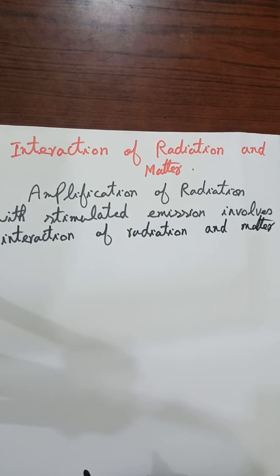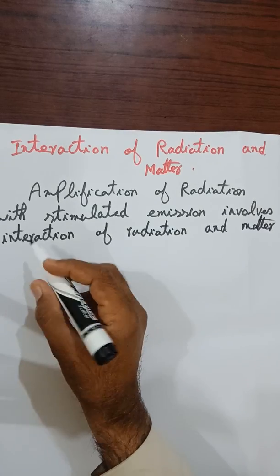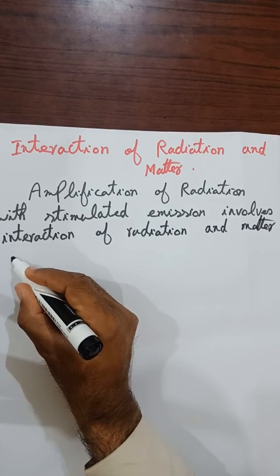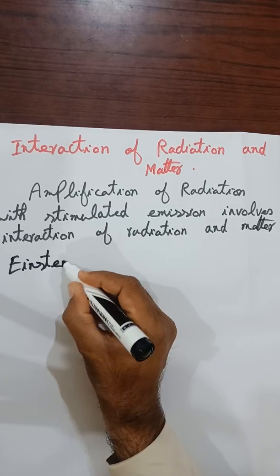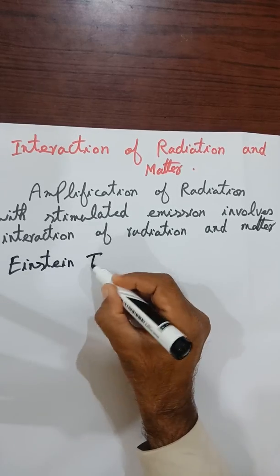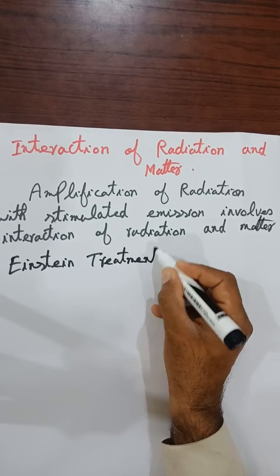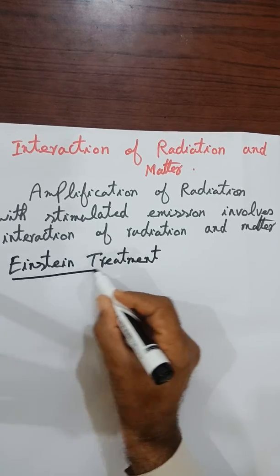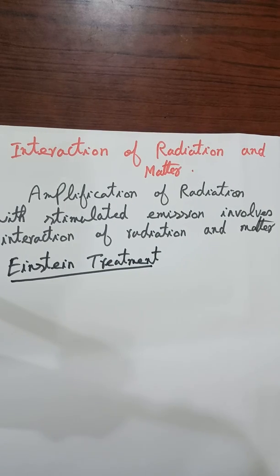There are two models about the interaction of radiation and matter. The first one is the Einstein model, also called the Einstein treatment.